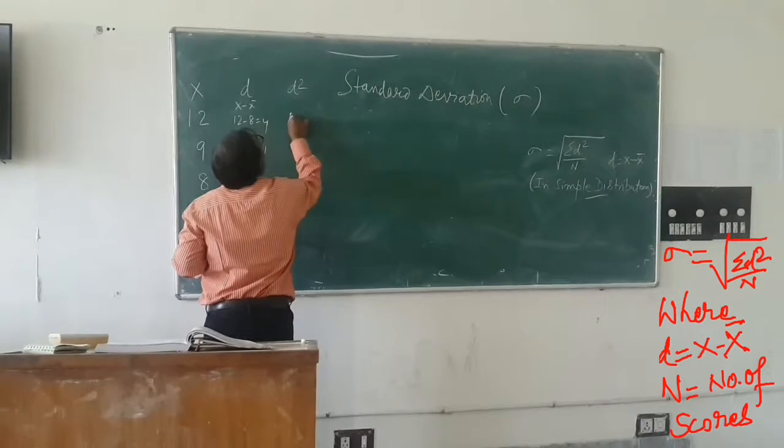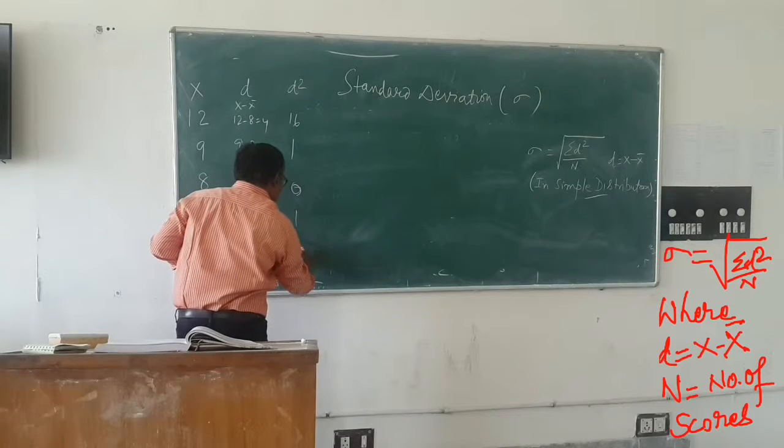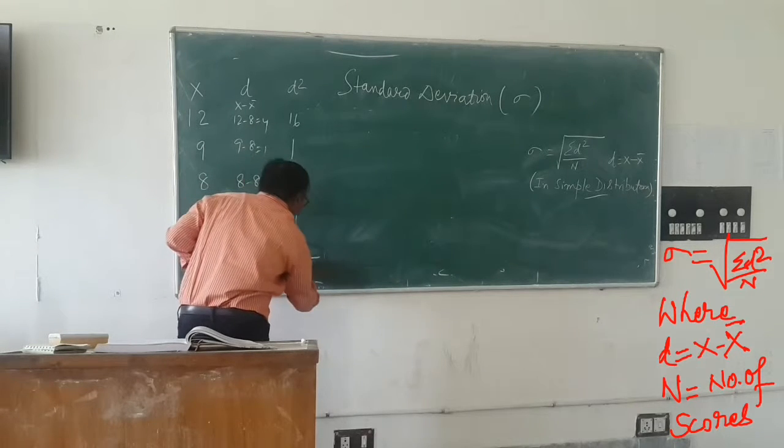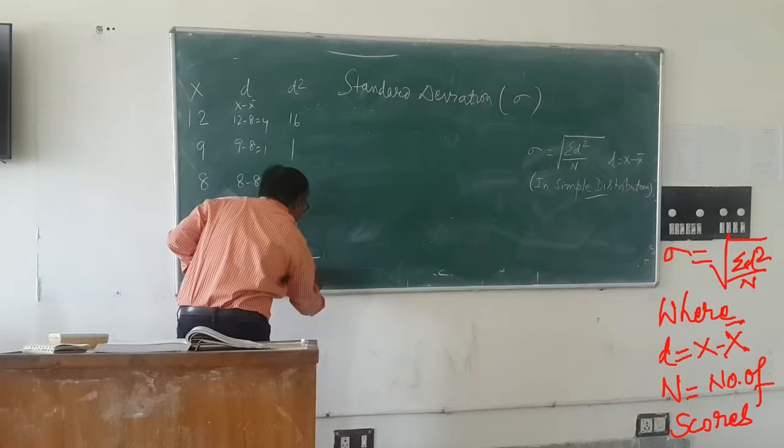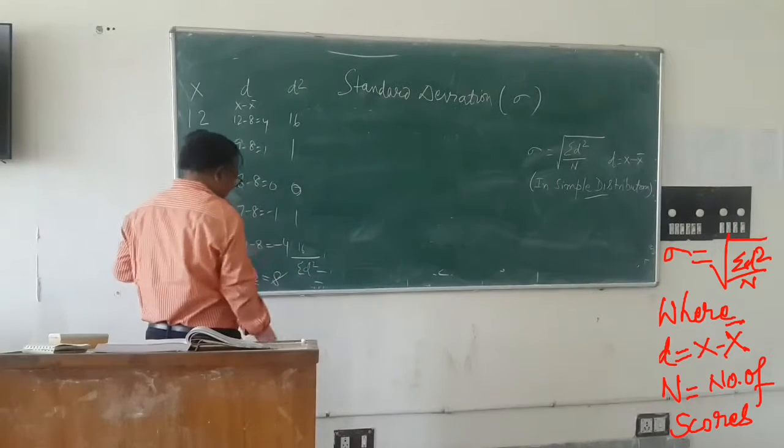d square: 16, 1, 0, 1, and 16. So summation d square is 34.